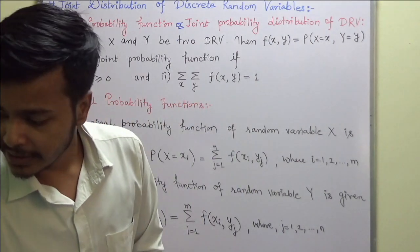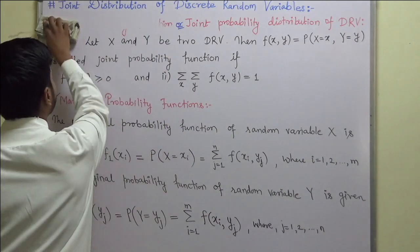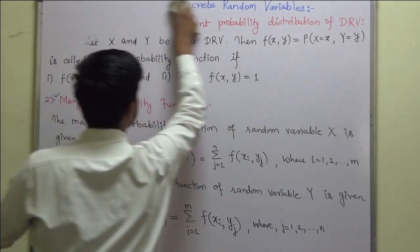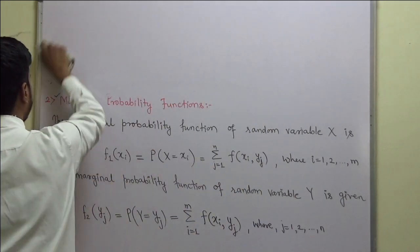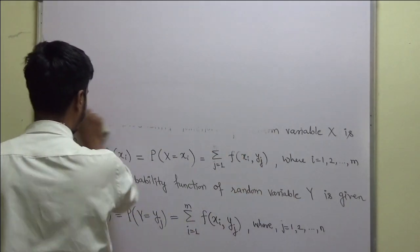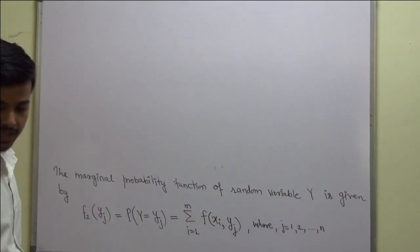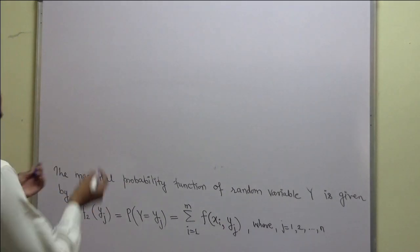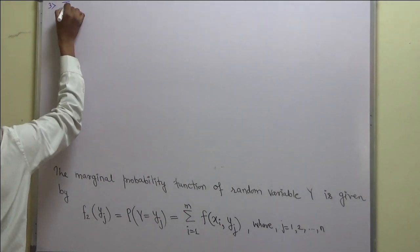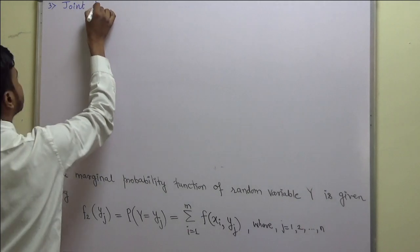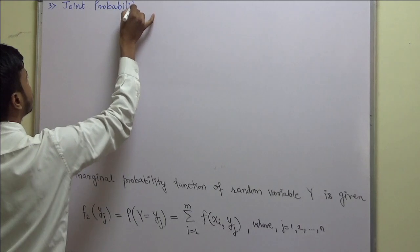The very important thing in this topic is the probability distribution table, and that is what we are going to see now. Next is the joint probability table.